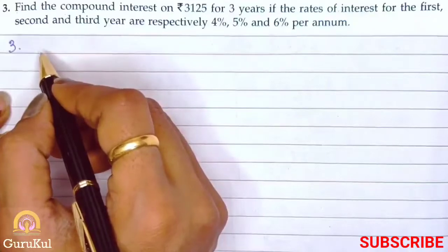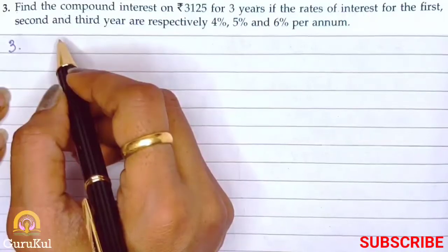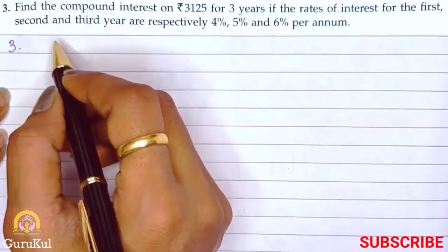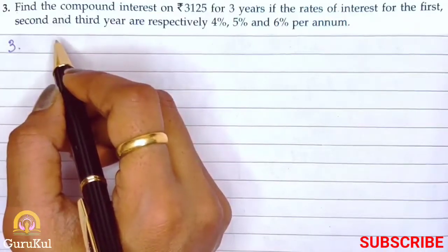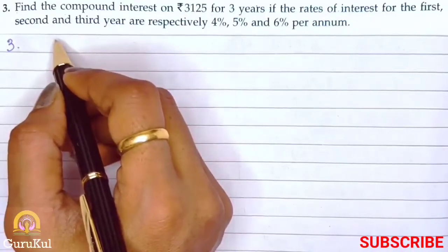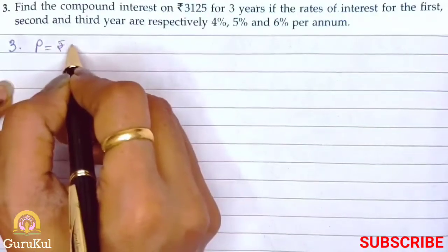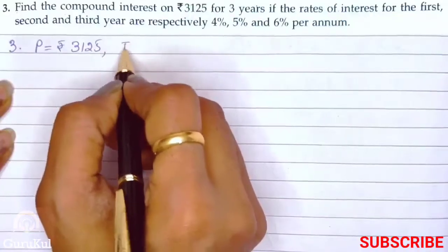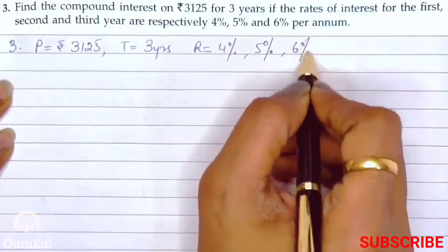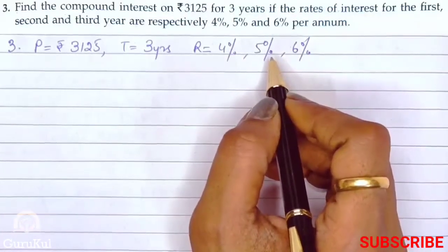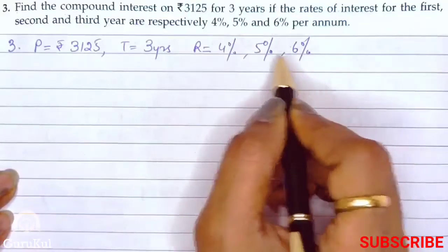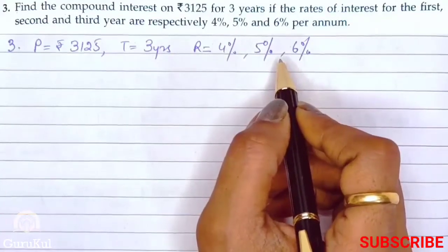Now question number 3: we need to find the compound interest on Rs.3125 for 3 years if the rate of interest for the first, second and third year are respectively 4%, 5% and 6% per annum. Note that the rate of interest is different every year, so there is a specific formula for this which was explained previously. P is equal to Rs.3125, time is equal to 3 years and rate is equal to 4%, 5% and 6%. The word 'respectively' means first year 4%, second year 5% and last year 6% — it should go in order.